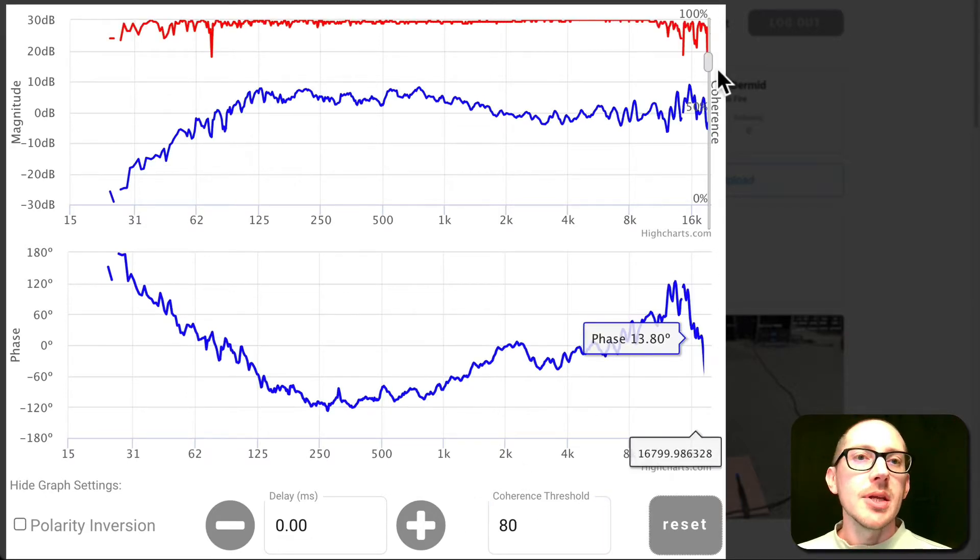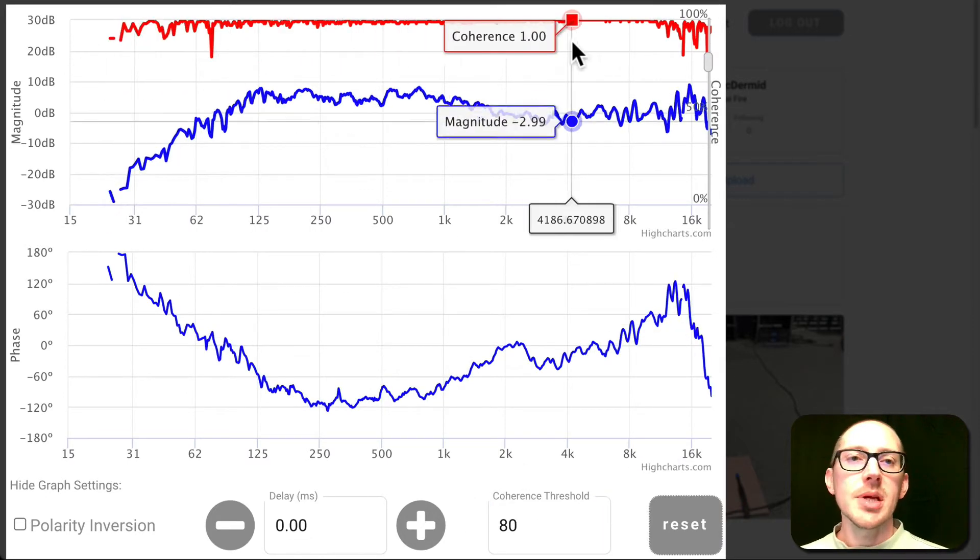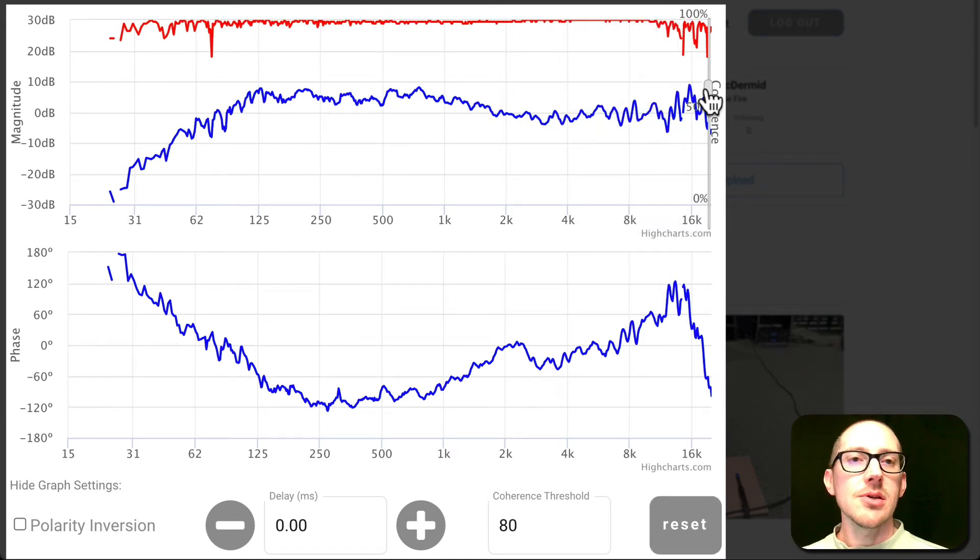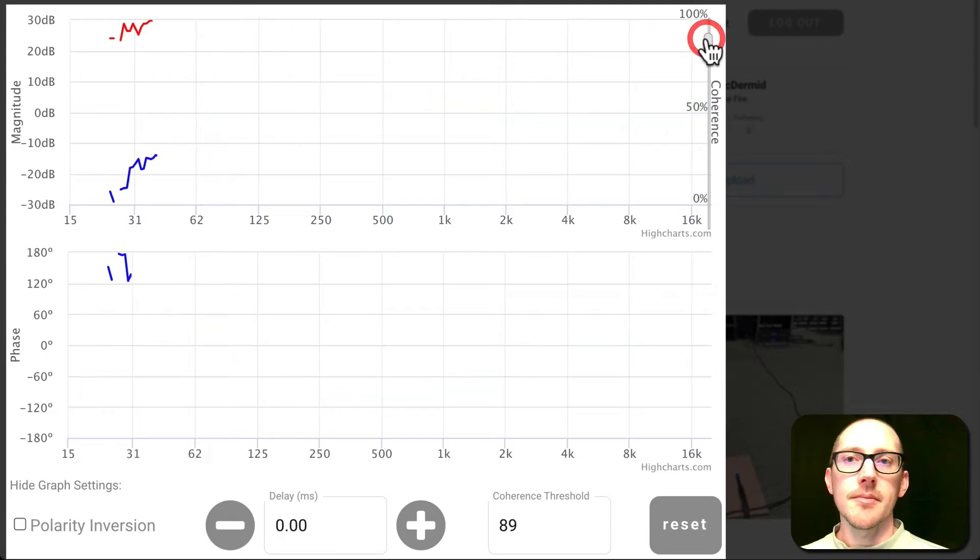you also see the slider jump up here and you see this information disappear. This slider also adjusts the coherence blanking threshold.